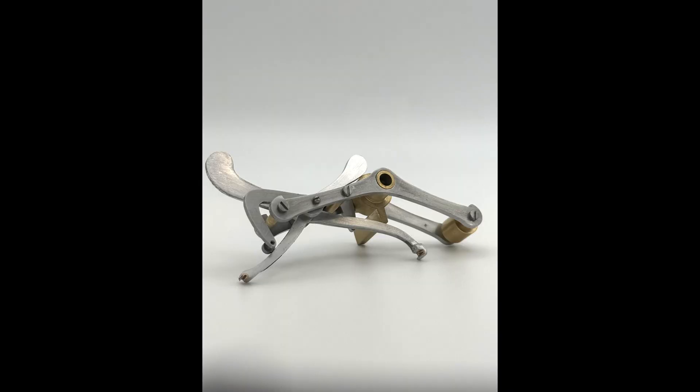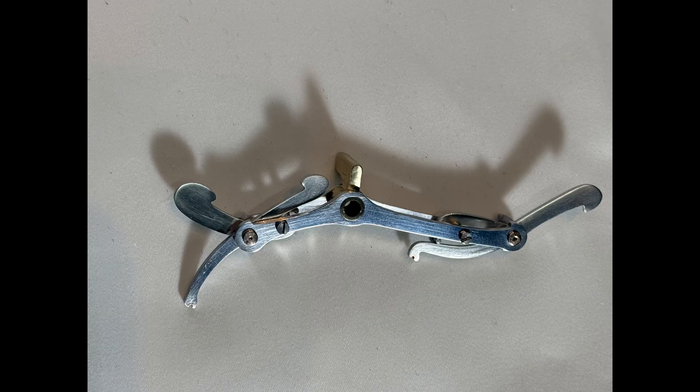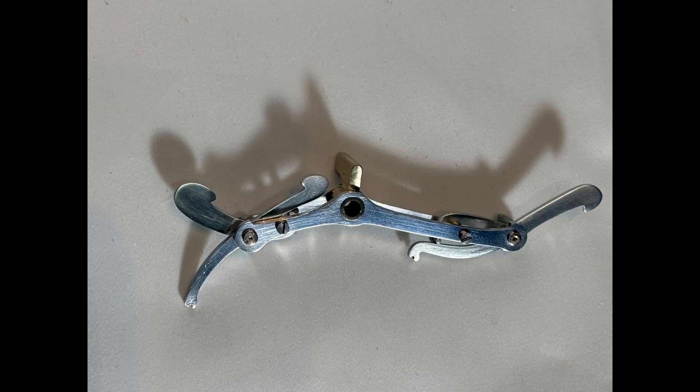So the next thing to do was to make the grasshopper escapement and in the 3D model that I produced I had made use of a twin pivot but looking at Clock B I saw that it had a single pivot so I needed to redesign this to work with my existing escape wheel.